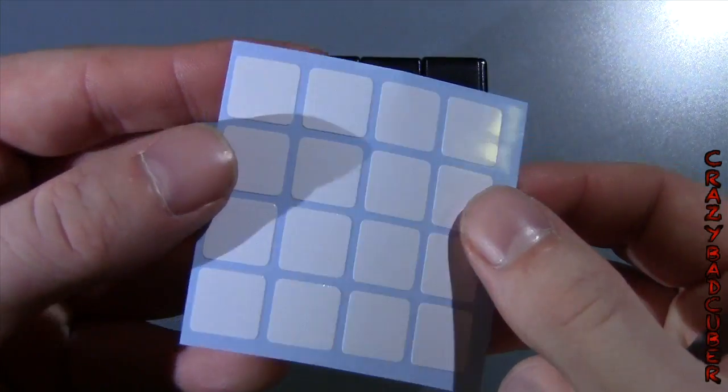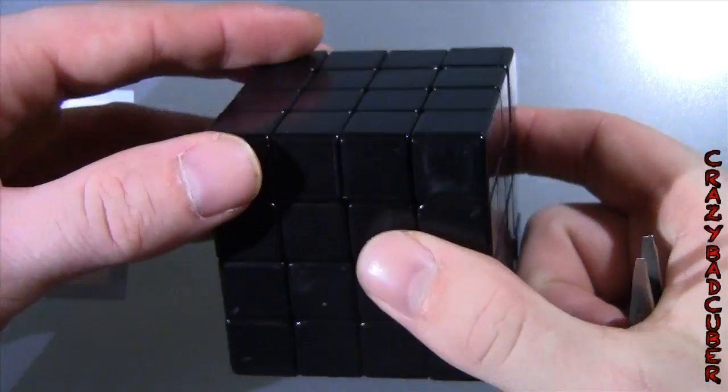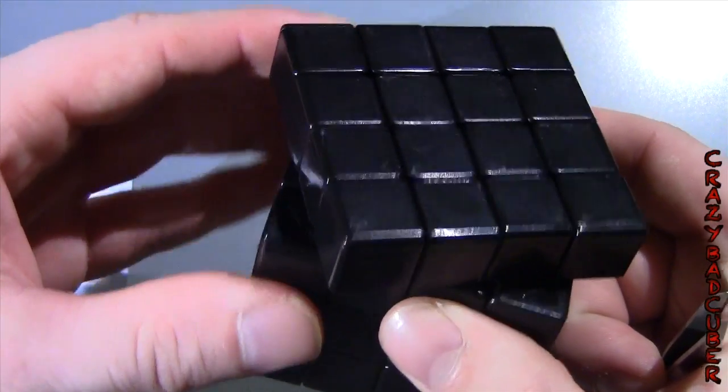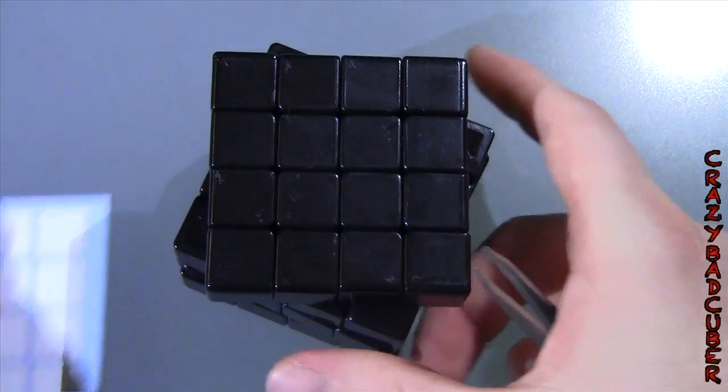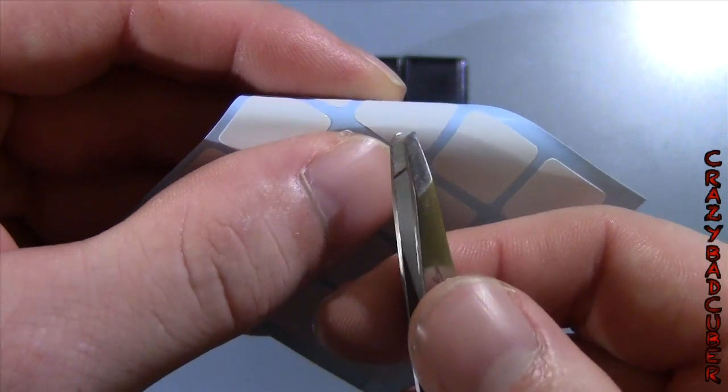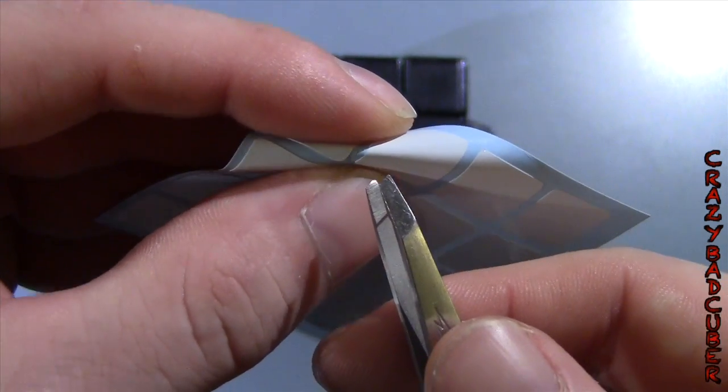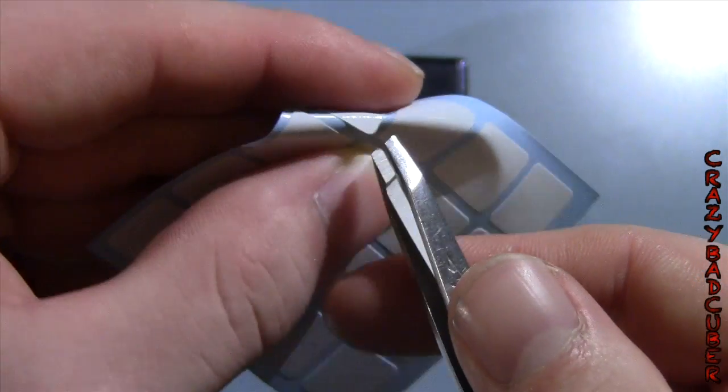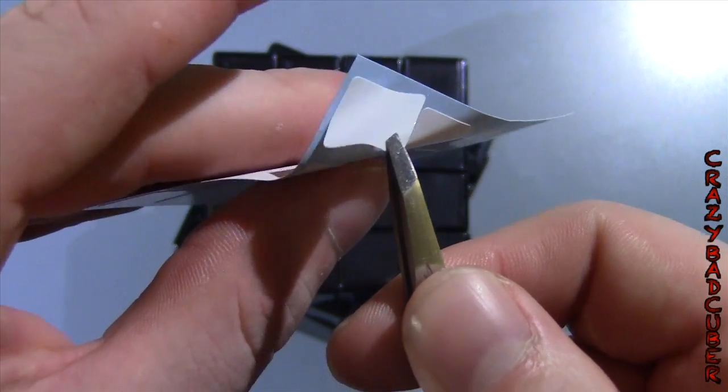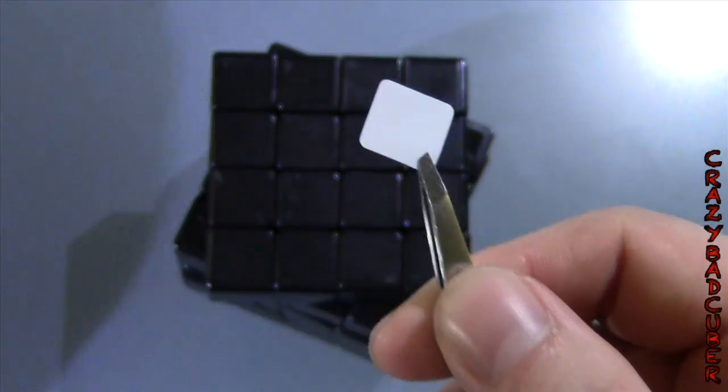I'm going to do the white sticker first. What I like to do is I like to turn this a little bit so the layers can't really move. What I do is I take the sticker and I hold it like this, and I take my tweezers and I bend it on the corner and then you can see that it's now come off the transfer tape. I take it and I peel it off.